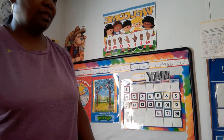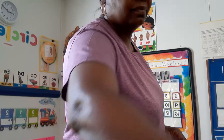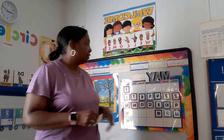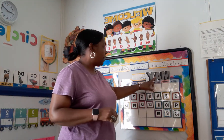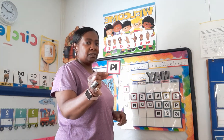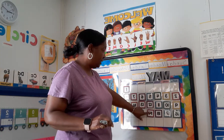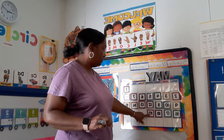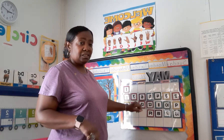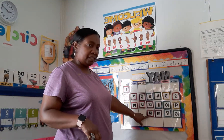Now let's go to the calendar. Today is May the 19th — that's a one and a nine — and it goes after 18. Today is Wednesday, May the 19th, 2021.